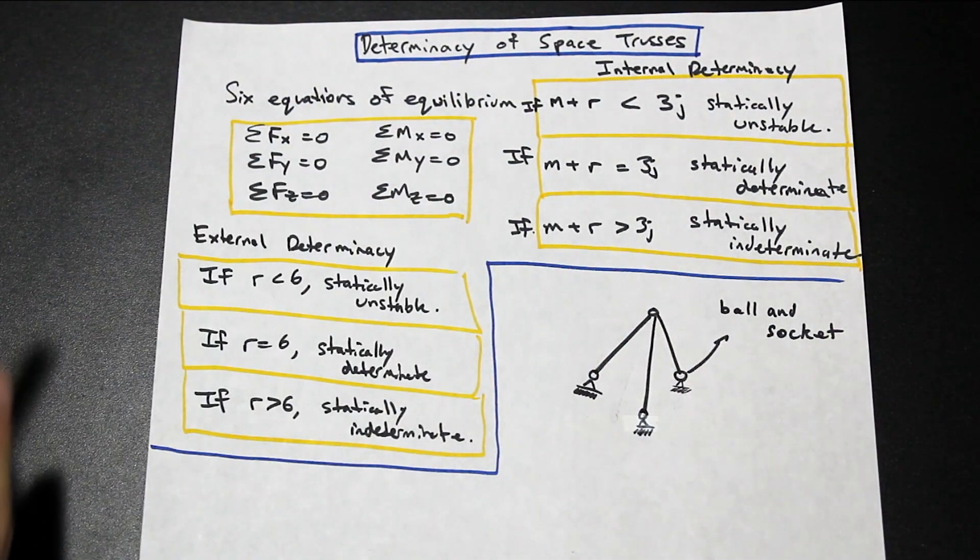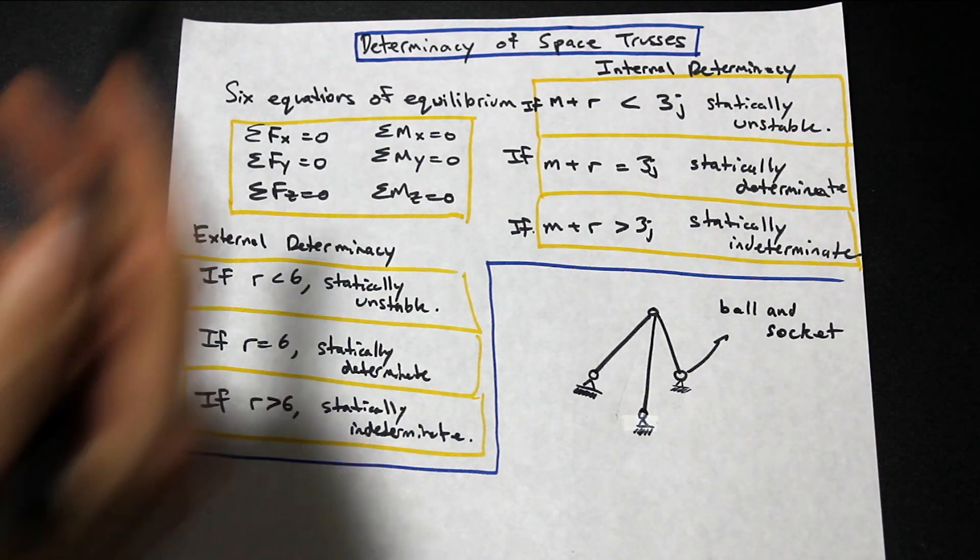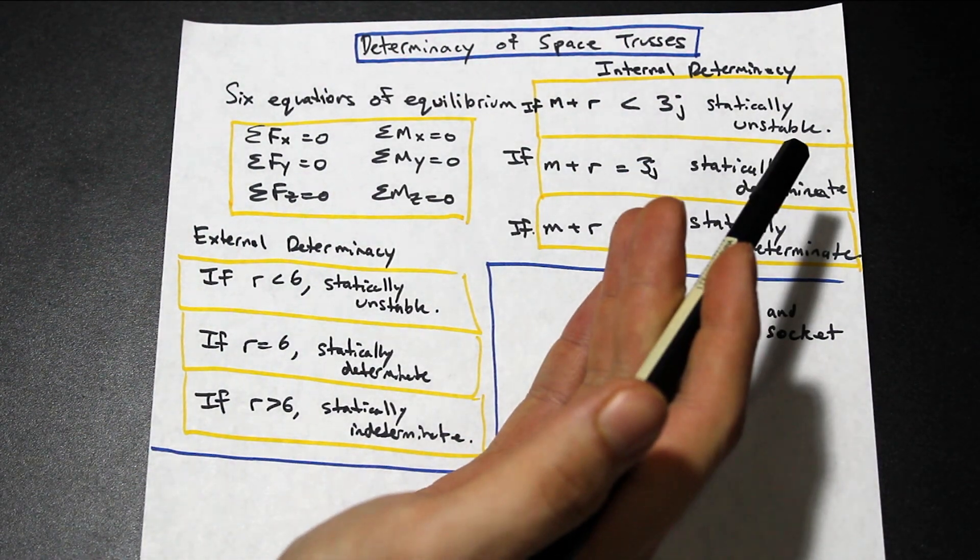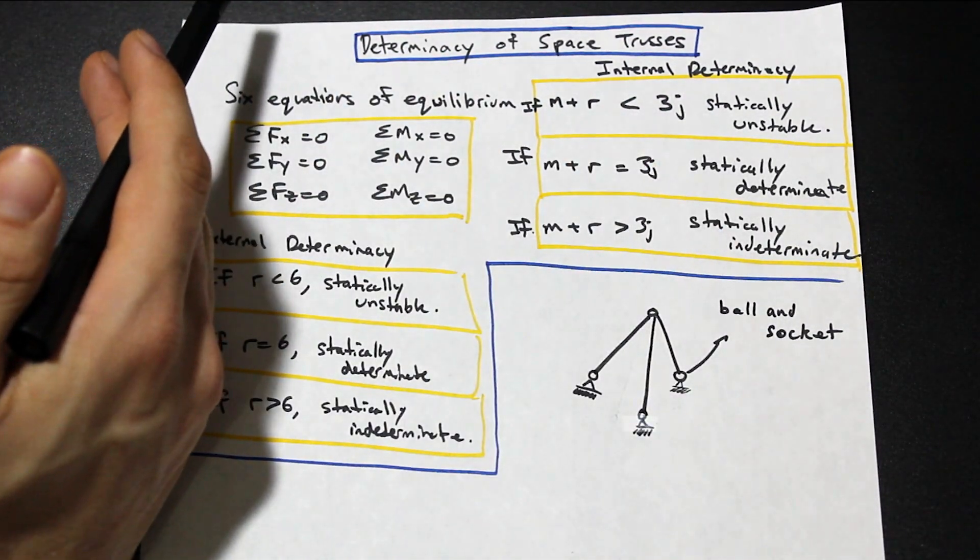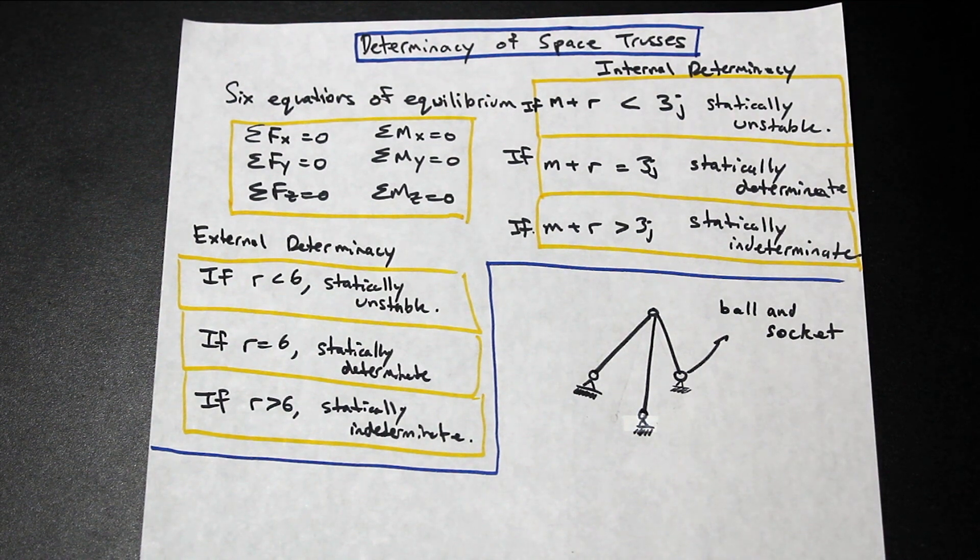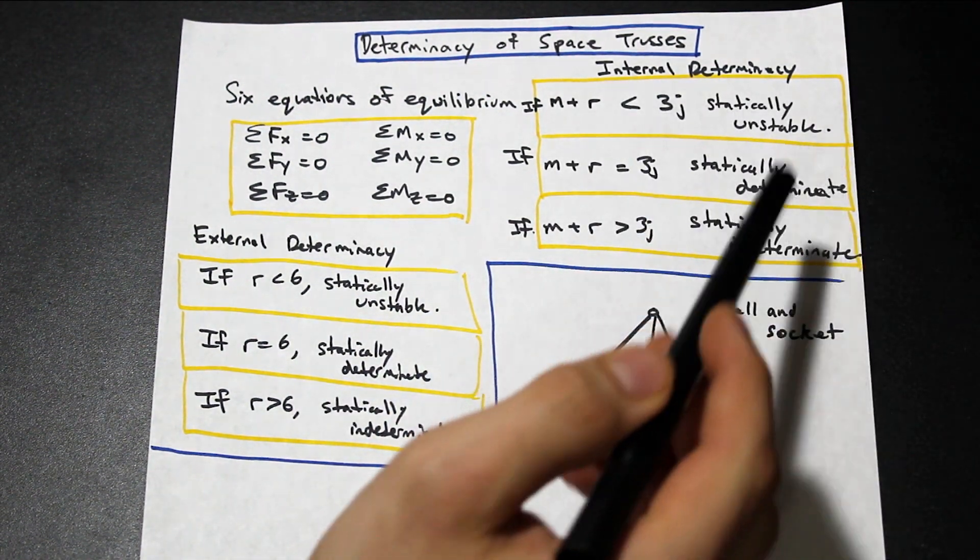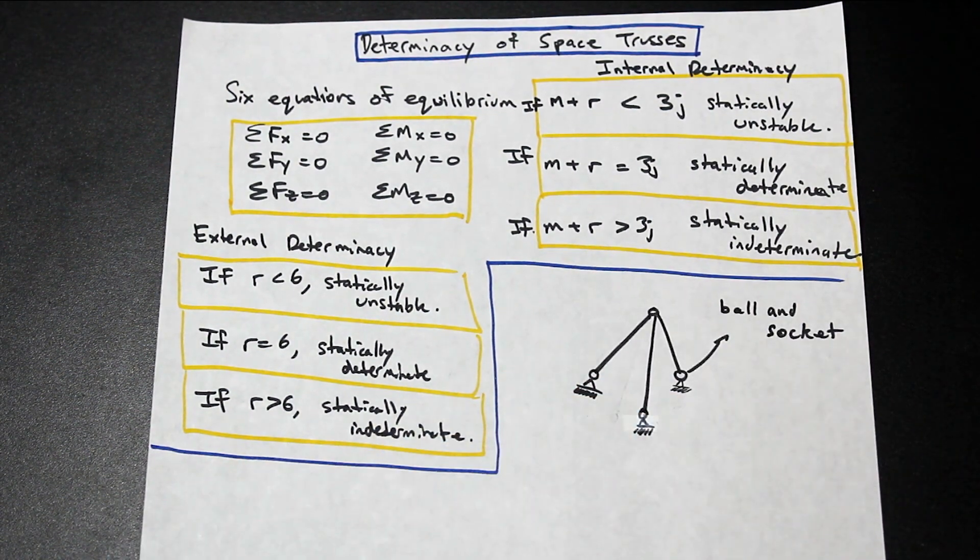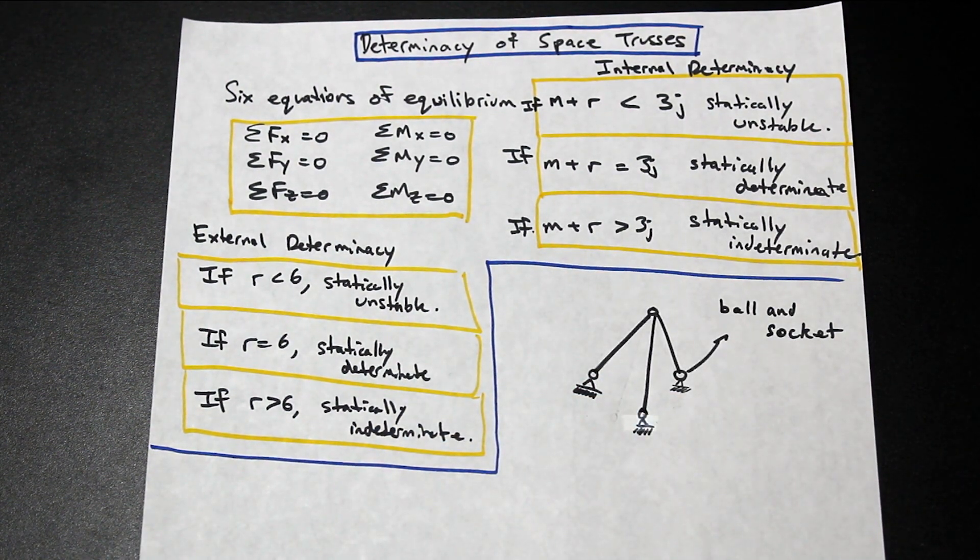And as you remember from previously, the basic rules of determinacy are that if the number of reactions equals the number of equations, then we have a statically determinate structure, we have a solution. If we have less, then we have a statically unstable structure. And if we have more, we have what's called indeterminate. So that's important to note here.